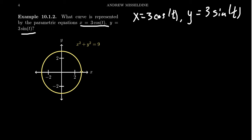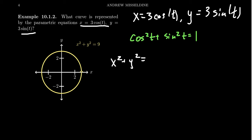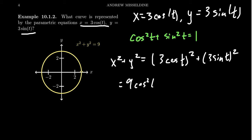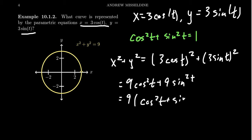Since x and y are defined using trigonometric functions, we can utilize trigonometric identities to eliminate the parameter. In particular, we're going to use the fact that cosine squared of t plus sine squared of t equals 1. Notice that if I take x squared plus y squared, this equals 3 cosine of t squared plus 3 sine of t squared. Distributing, we get 9 cosine squared of t plus 9 sine squared of t. Factoring out the 9, we get 9 times cosine squared of t plus sine squared of t. And cosine squared plus sine squared equals 1.